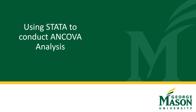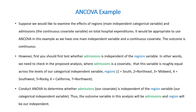In this learning module, we will use STATA. Suppose we would like to examine the effects of regions, which is considered our main independent categorical variable, and admissions, that is our continuous covariate variable, on total hospital expenditures. It would be appropriate to use ANCOVA in this example, as we have one main independent variable and a continuous covariate. The outcome is continuous as well, that is, the total hospital expenditures.